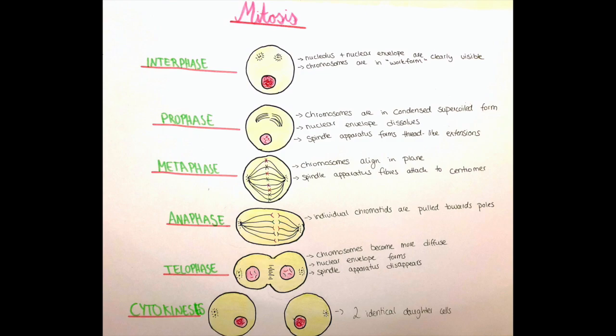The spindle apparatus also starts to disappear because it has completed its job for this cell division and it's not needed anymore right now. Also you can see here that the cytoplasm already starts to kind of fold in, which is the next step in the division of those two cells.